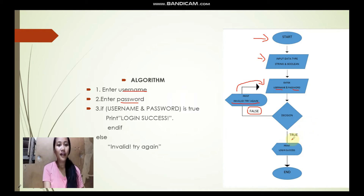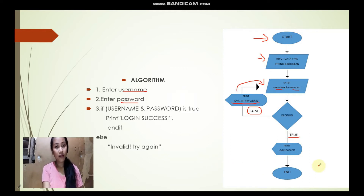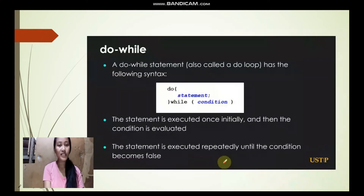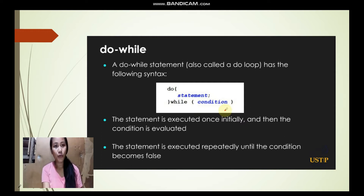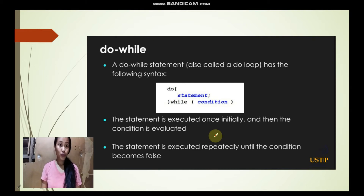Unless the condition becomes true, that is the time it will display 'login success' and end the program. The do-while loop syntax is: 'do' enclosed in curly brackets containing the statement, followed by 'while' with the condition. This do-while loop executes first regardless of whether the condition in the while is true or false.